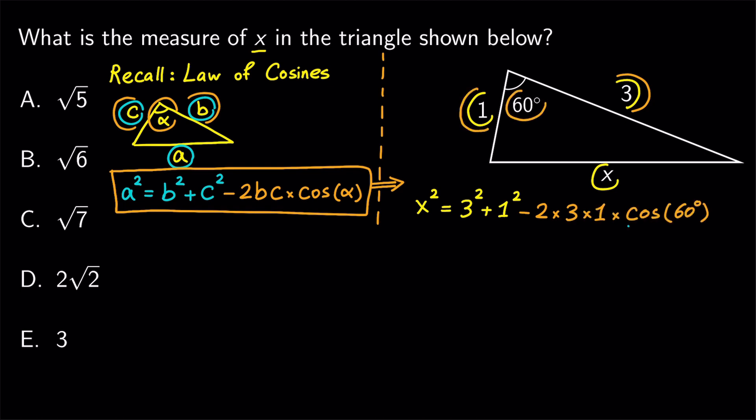We know that cosine of 60 degrees is 0.5, so 0.5 times two gives us one, and we get x squared equals nine plus one minus three, which is seven.